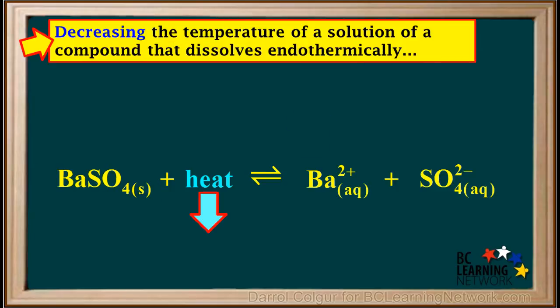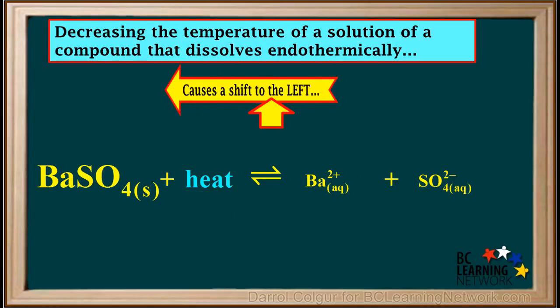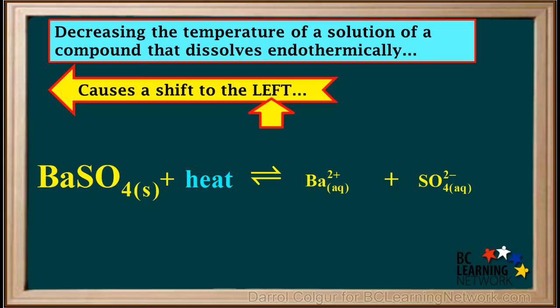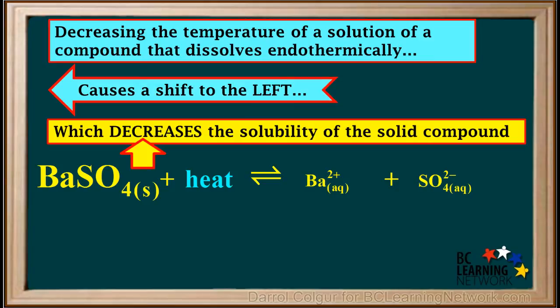So we can summarize by saying that decreasing the temperature of a solution of a compound that dissolves endothermically causes a shift to the left, which decreases the solubility of the solid compound.